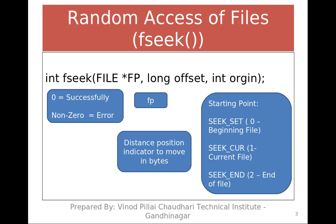Now, fseek takes three arguments. Argument one: you need to pass the file pointer. Second is the offset. Before understanding offset, let's understand what is origin. Origin says from where you want to jump. If you want to jump from the beginning, the origin is zero. If you want to jump from the current position, origin is one. If you want to jump from the end, origin is two.